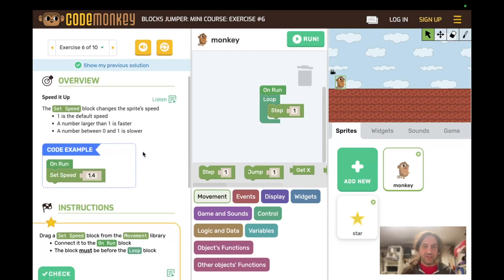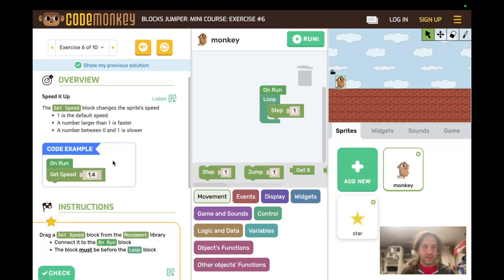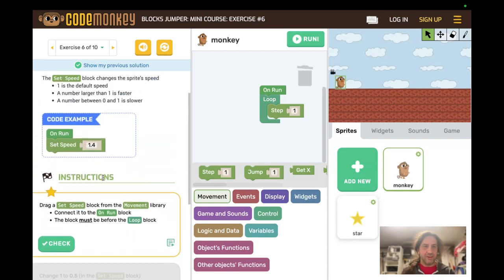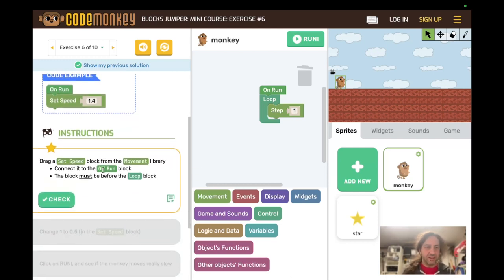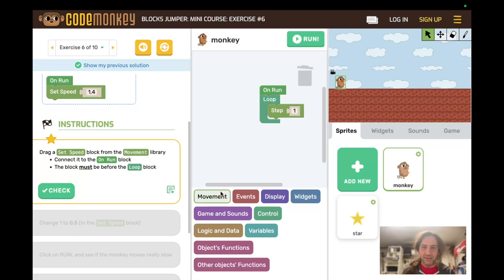Now we're going to learn about different speeds. So scroll down. One thing students might do is they see, oh, there's this little puzzle piece. It says 1.4. I'm going to change this puzzle piece to 1.4. That's the wrong thing to do. Another thing they'll do is they'll see drag set speed from the movement library. And you have to scroll, scroll, scroll, scroll, scroll. Set speed. And sometimes they'll delete the loop and step because they just wanted to add the set speed. Then they'll have to add the loop and step back in. Note the block must be before the loop block. Otherwise the speed will never be set.